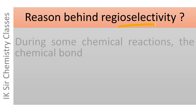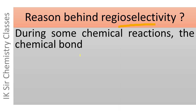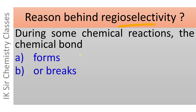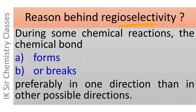Now let us see what is the reason behind regioselectivity. During some chemical reactions, the chemical bond forms or breaks preferably in one direction than in other possible directions. Kuch rasayinik prathkriyaon ke darmiyaan chemical bond kisi ek direction mein preferably banta hai ya toot ta hai, doosre directions ki tulna mein, aur yahi kaaran hai regioselectivity ke peeche.